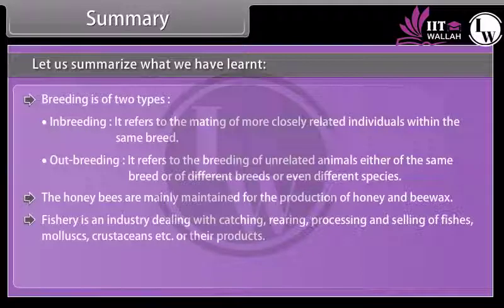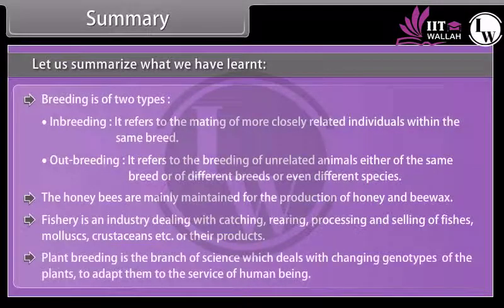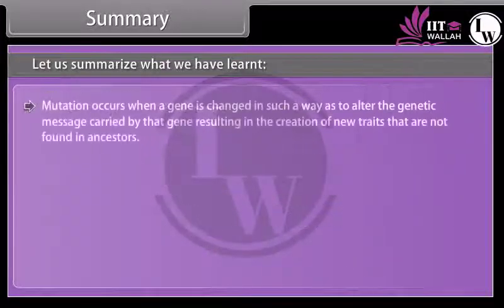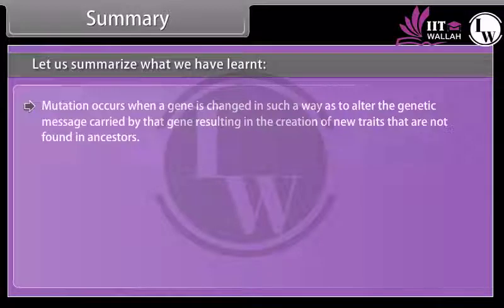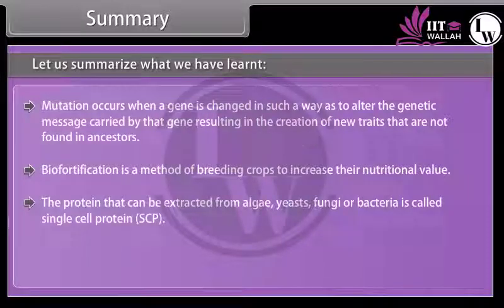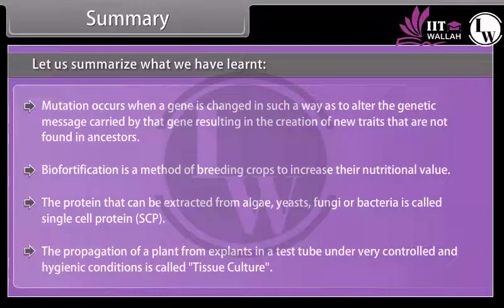Fisheries is an industry dealing with catching, rearing, processing and selling of fishes, molluscs, crustaceans, etc., or their products. Plant breeding is the branch of science which deals with changing genotypes of plants to adapt them to the service of human beings. Mutation occurs when a gene is changed in such a way as to alter the genetic message, resulting in the creation of new traits not found in ancestors. Biofortification is the method of breeding crops to increase their nutritional value. The protein extracted from algae, yeasts, fungi or bacteria is called single cell protein (SCP). The propagation of a plant from explants in a test tube under very controlled and hygienic conditions is called tissue culture.